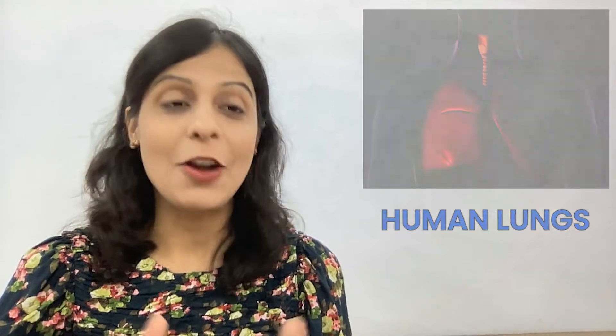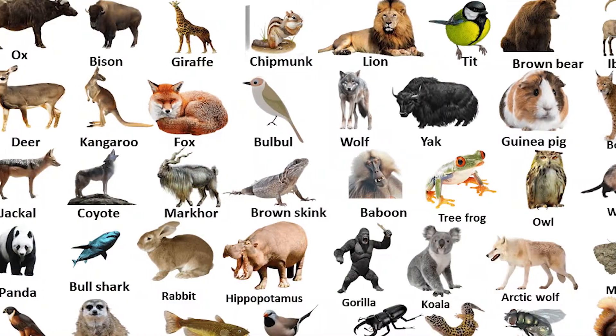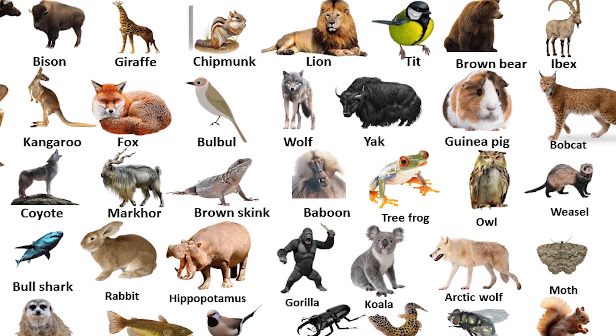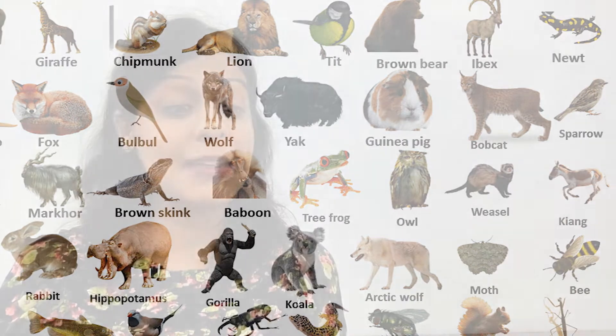There are animals that have lungs and breathe with them — animals like lions, elephants, cows, goats, frogs, lizards, snakes, monkeys, and birds. They have lungs in their chest cavity, just like ours.